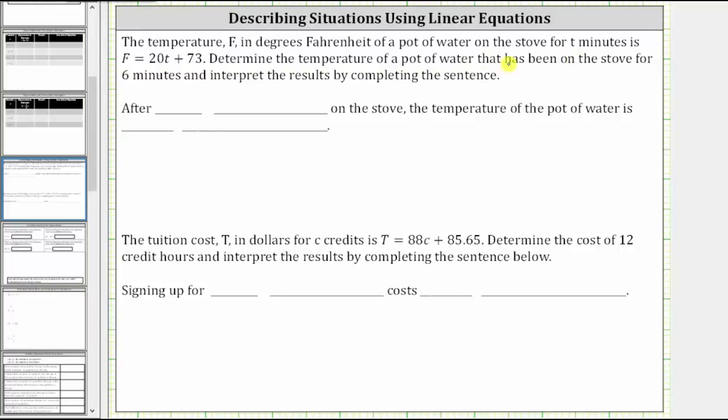So for this problem, because the pot of water has been on the stove for six minutes and T is the number of minutes, we know T is equal to six.